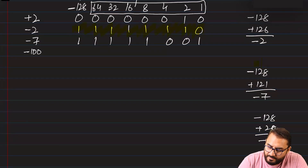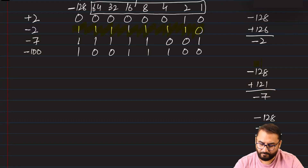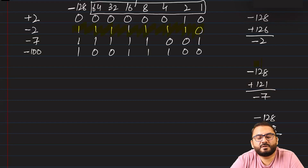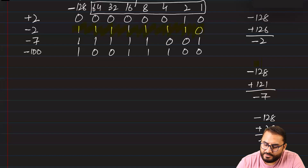To make minus 100: minus 128 plus 28 equals minus 100. So 16 plus 8 is 24, plus 4 is 28, and minus 128 plus 128 minus 28 gives minus 100. There is also a direct method to achieve negative numbers without performing these calculations, which is useful since a calculator is not allowed in exams.